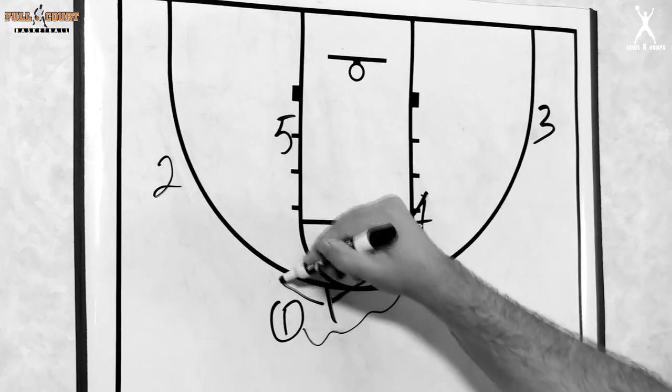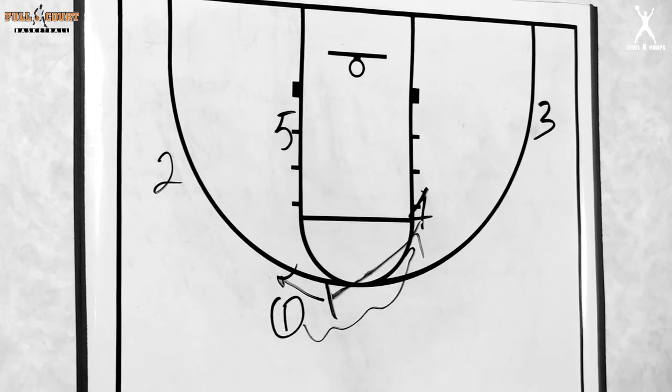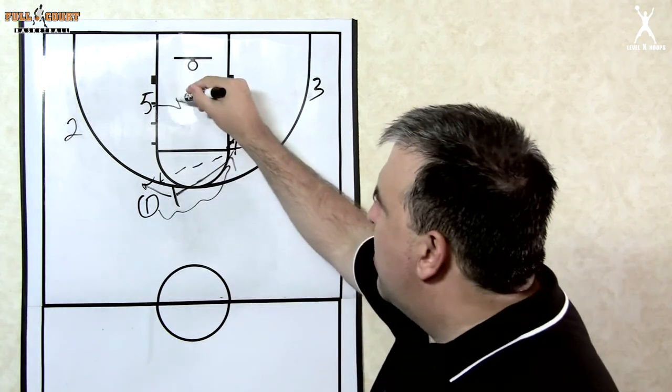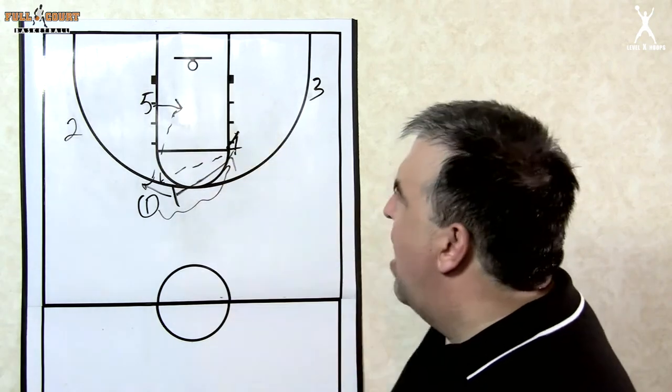If four is a shooter, you'd rather have four fade here in this situation versus roll to the basket. So one could kick back to four, and if four doesn't have the shot, five could step in and post up and you can even get a high-low look.